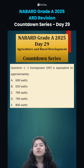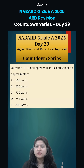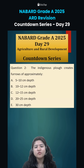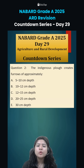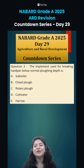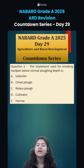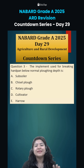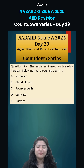Coming to today's questions: Question 1 — one horse power is equivalent to approximately how many watts? Question 2 — the indigenous flow creates a furrow of approximately how much depth? Question 3 — the implement used for breaking hardpan below normal plowing depth is what? Comment down the right answers and we will discuss in the next class. Thank you.